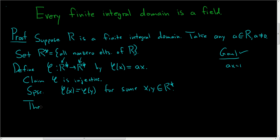What does this mean? This means that ax equals ay. Then subtracting ay from both sides, we end up with ax minus ay equals zero. Hence, we have a times (x minus y) equals zero.